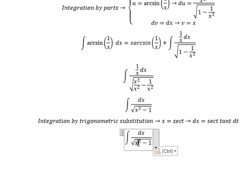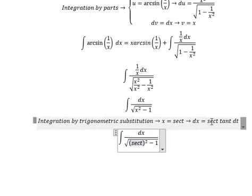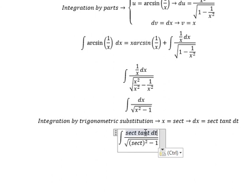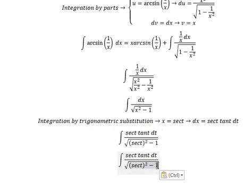We put secant of t in and change dx for secant t tan t dt. This becomes tan squared t. The square root of tan squared t is tan t. Simplifying, we get secant t dt.